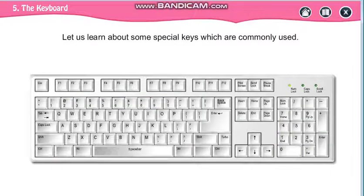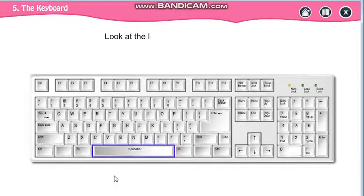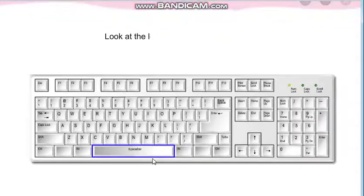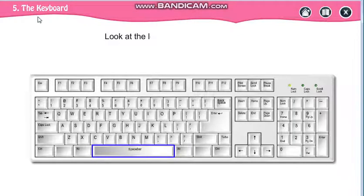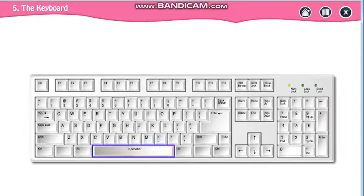Now the special keys. The first special key is your space bar key. It is used to give space between two words. Like — look, after 'look' what is there? A blank space. Then 'at', then blank space, then 'the'. So this blank space comes with the space bar key. And it is the longest key on the keyboard.